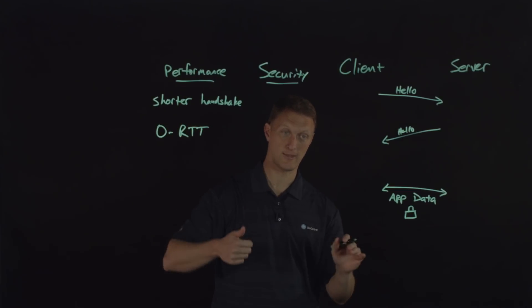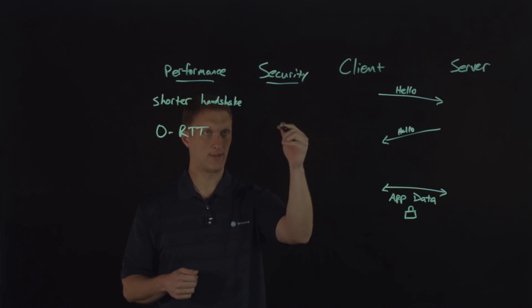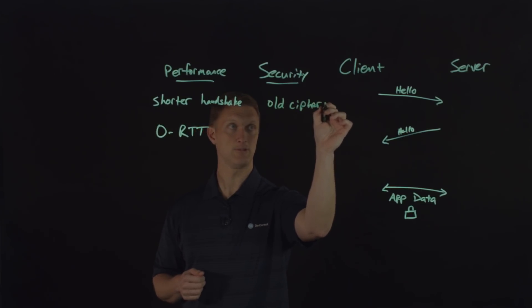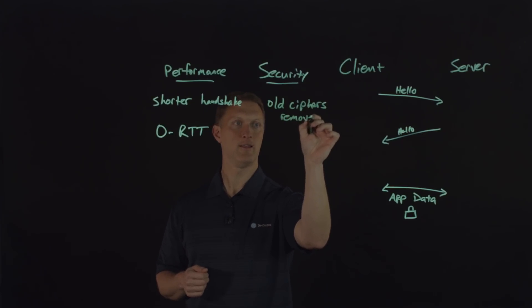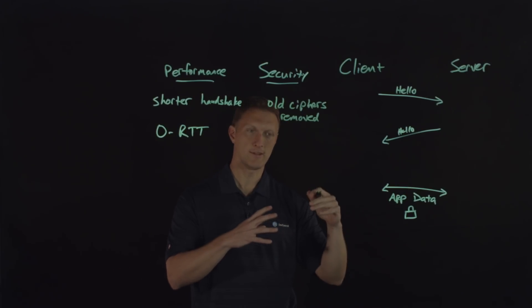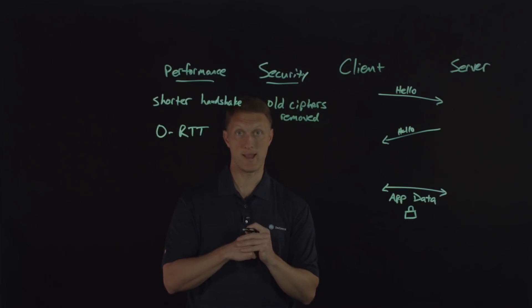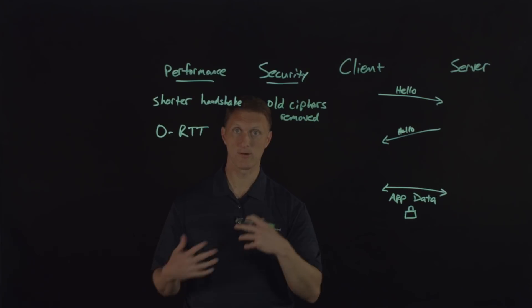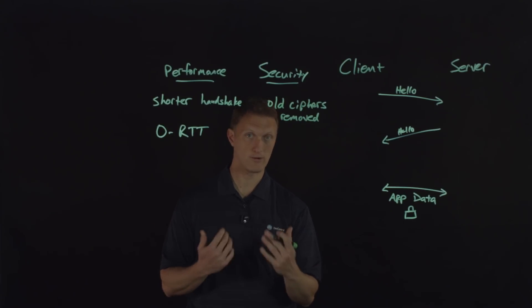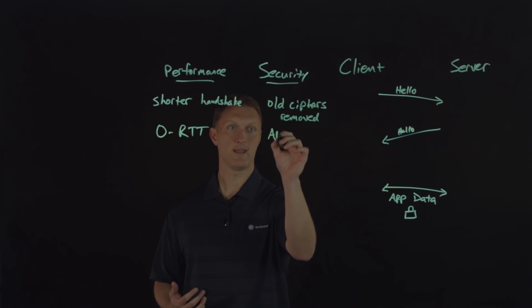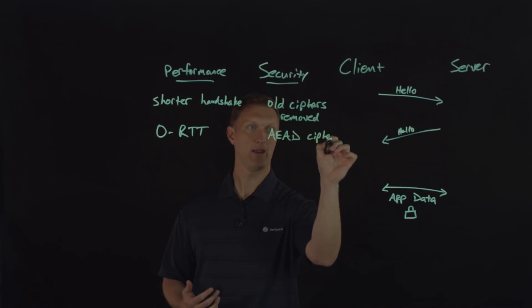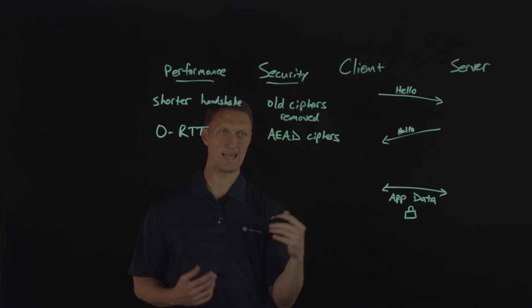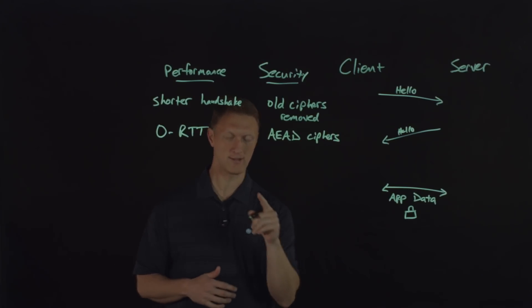From a security perspective, there are several things to note. First, old ciphers have been removed. Anything the IETF considered legacy — ciphers that have been problematic or historically susceptible to attacks — have been removed in favor of newer, stronger cipher sets. With that, every cipher set approved for TLS 1.3 is an AEAD cipher. Stay tuned — we're going to do another Lightboard on AEAD ciphers, explaining what those even are.